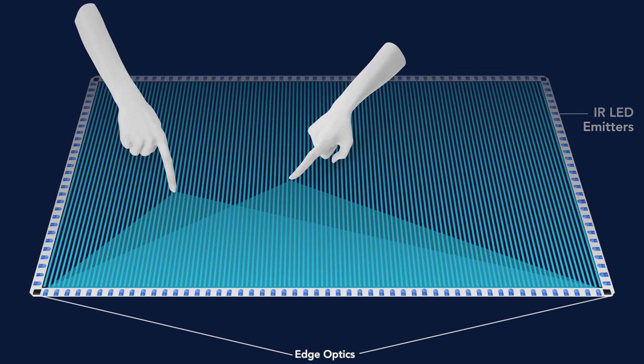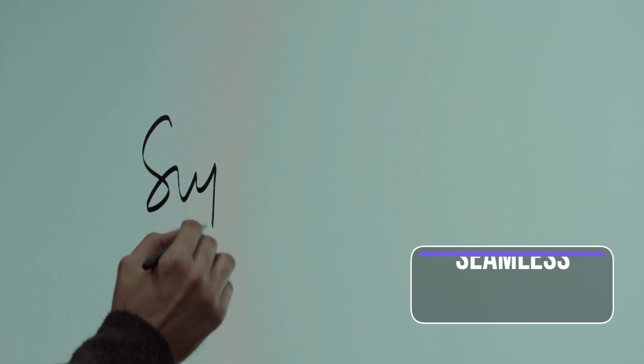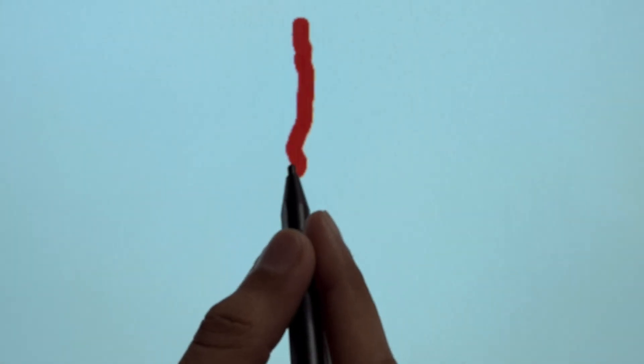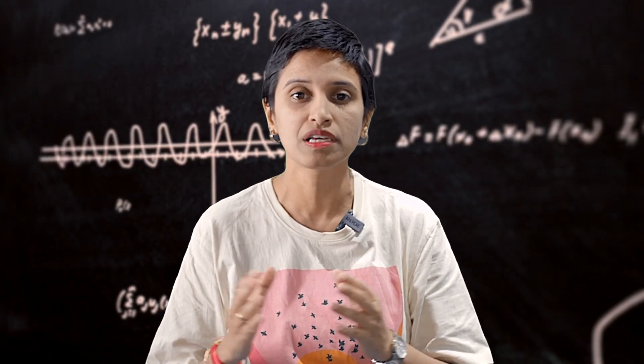So when you touch the panel, the interruption is detected with high precision, resulting in a seamless writing experience. The touch and the ink align perfectly together. This makes a huge difference in the overall user experience, especially for teachers who require effortless writing.